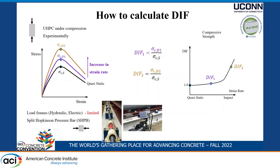The striker hits the incident bar, and a stress wave travels through it elastically. The wave travels through the specimen — part is reflected back, part travels through the second bar and is reflected there too. Based on those strain histories obtained in the first and second bars, you can calculate the stress-strain response of the material.